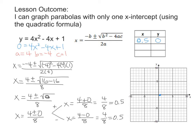Here is the issue: if we only have one x-intercept, what we usually do to find our vertex is add the two x-intercepts and divide by 2. But we can't do that if another x-intercept does not exist. So now we don't know how this parabola is going to open — up, down, wider? But we do know that if there's only one x-intercept, it must be our vertex.